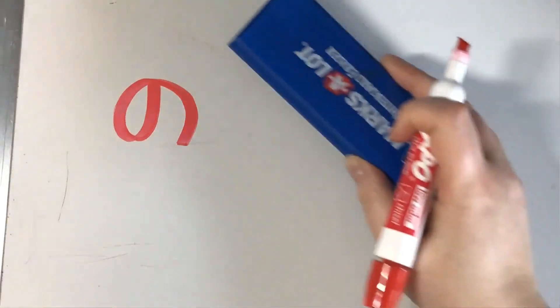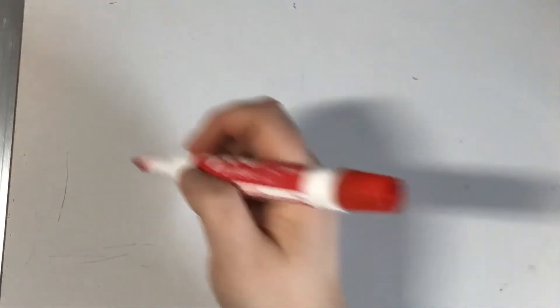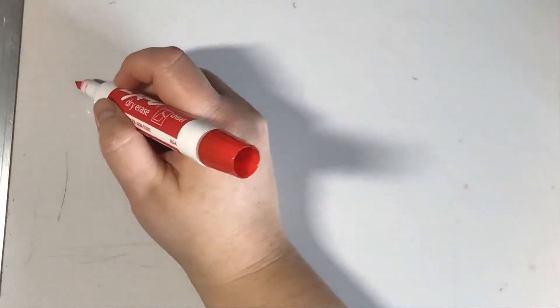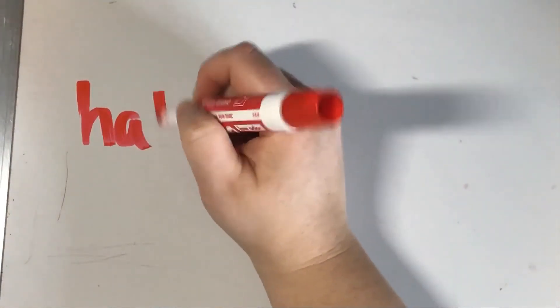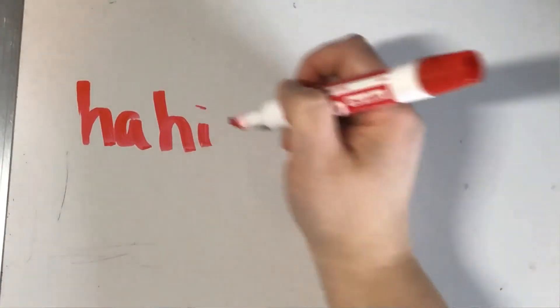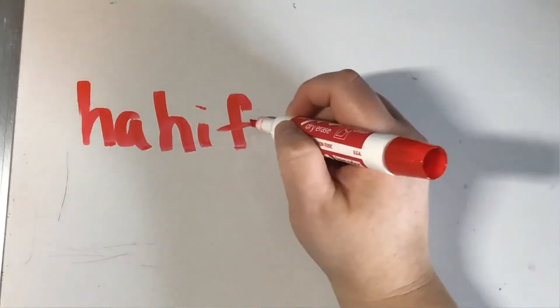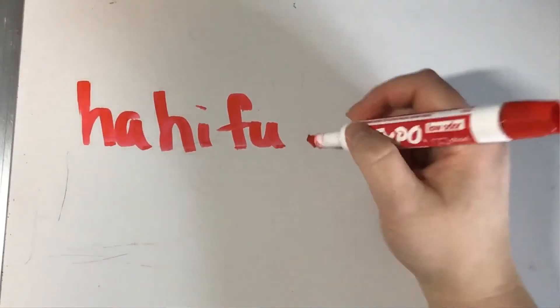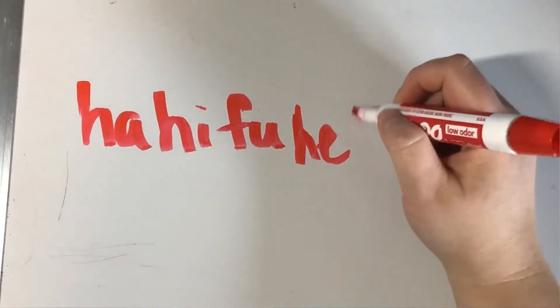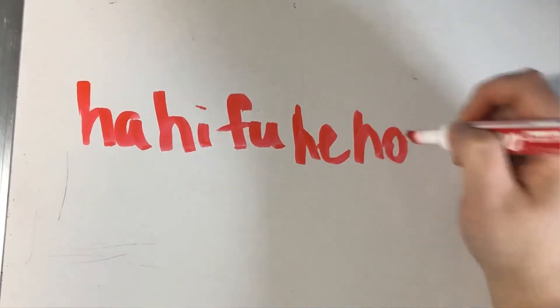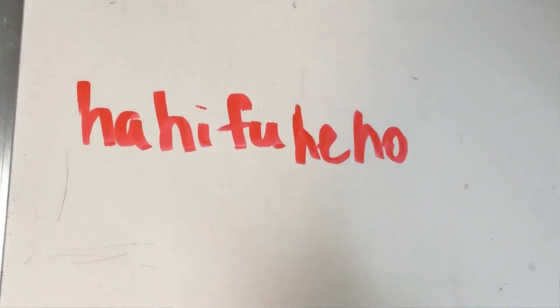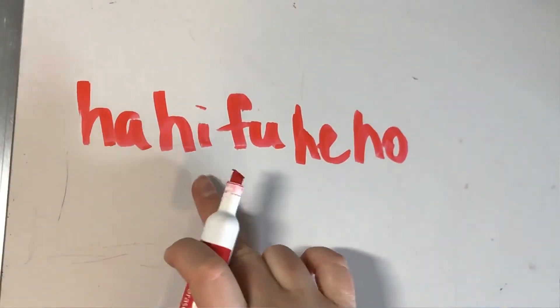Our last set for today is the H-row: ha, hi — but instead of hu, we pronounce it fu — then he, ho. So: ha, hi, fu, he, ho.